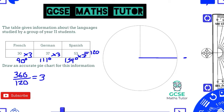Before moving on, label that section. I'll write 'French' and '90°' in there. You could also add the original value of 30, but for simplicity I'll just keep the label and the angle.